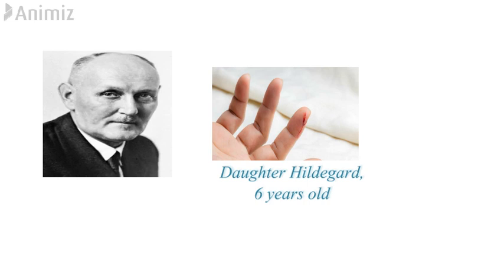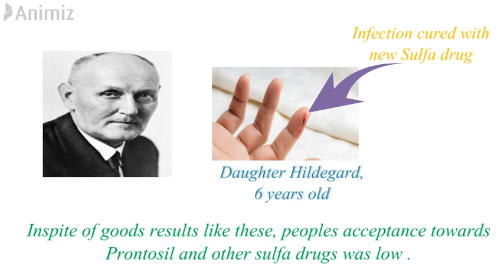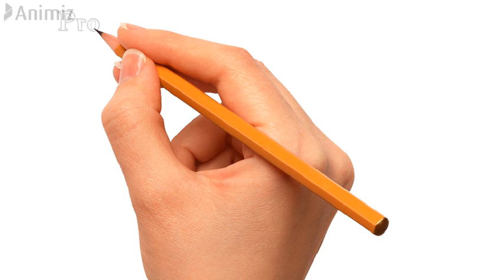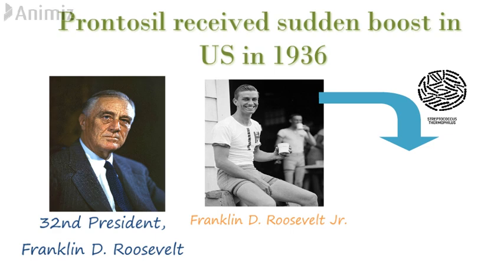Domagk was continuously working on new sulfa drugs. One day his six-year-old daughter Hildegard got a blood infection from a needle. He treated her with his new sulfa drug and saw that the infection was cured. Despite results like these, public acceptance in Germany towards Prontosil and other sulfa drugs remained very low. Prontosil received a sudden boost in the United States in 1936, when the son of the 32nd president, Franklin D. Roosevelt Jr., got a deadly Streptococcus infection and was cured with this German antibiotic.